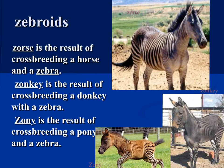Here we have some zebroids that you'll find interesting. The zorse is a cross between a horse and a zebra. The zonkey is a cross between a zebra and a donkey, and the zonkey is a zebra and a pony. Those of you in the Honor Society who go on our safari trip will get to see some of these at the safari down in Atlanta.